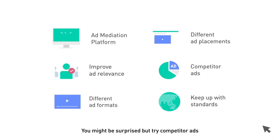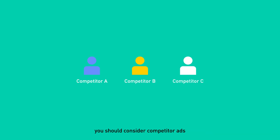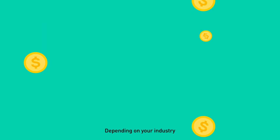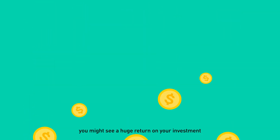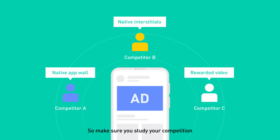You might be surprised, but try competitor ads. If you find yourself within a hyper-competitive category, you should consider competitor ads as they can really boost your eCPM. Depending on your industry, you might see a huge return on your investment. So make sure you study your competition and see how their product can help you grow.